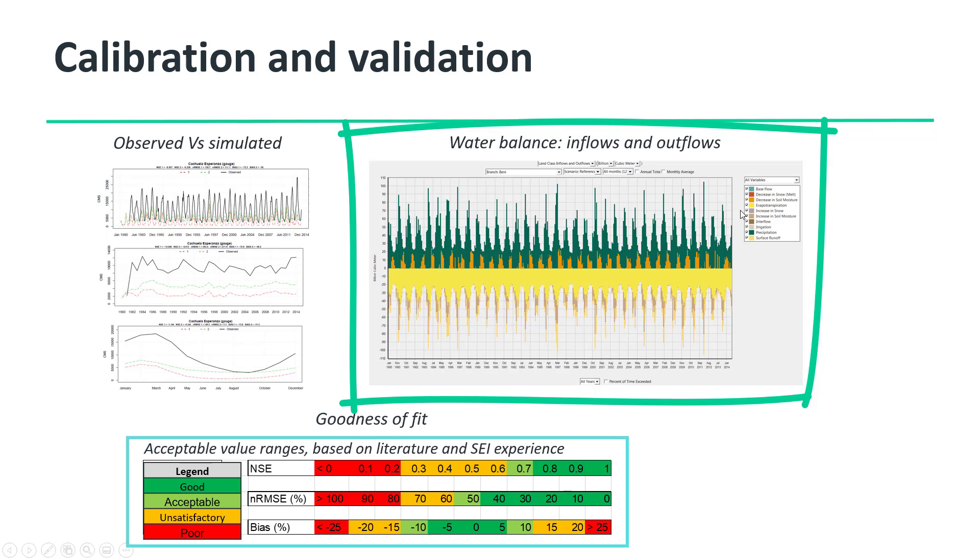For example, what percentage of the precipitation becomes evapotranspiration, runoff, snow, interflow, or baseflow? Is there an increase or decrease of the soil moisture? Or does it become groundwater flow? It is essential not only to represent the observed stream flow properly but also the water balance components.